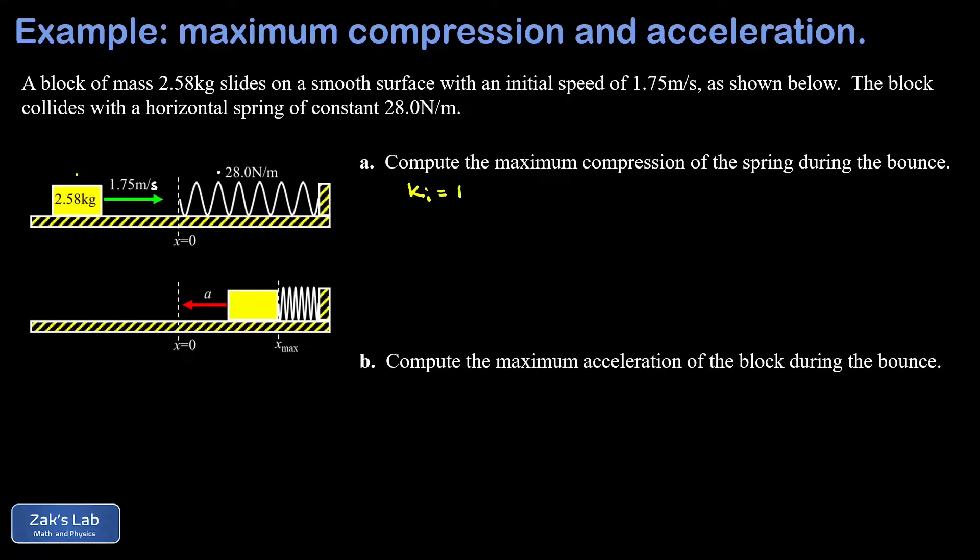The energy conservation idea here is just that the initial kinetic energy turns into the final spring potential energy. Our initial kinetic energy was one half mv₀ squared for the sliding block, and our final spring potential energy when the conversion is complete is one half k x_max squared.